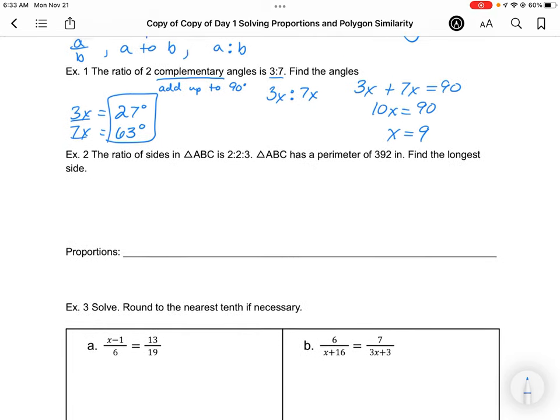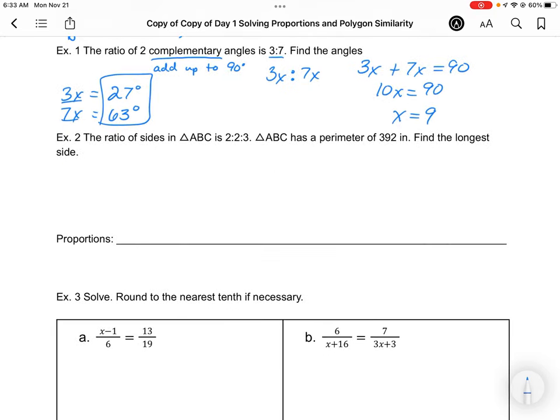We can also use this for more than two values at a time with an extended ratio. The ratio of the sides of triangle ABC is 2 to 2 to 3, and triangle ABC has a perimeter of 392 inches. To find the longest side, we need to figure out the common factor.